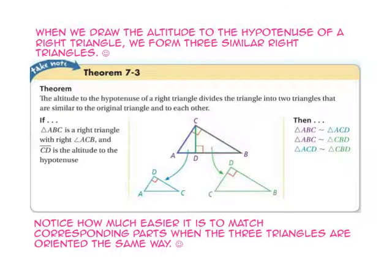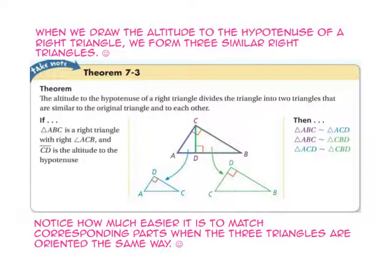Let's take a look at theorem 7-3. The altitude to the hypotenuse of a right triangle divides the triangle into two triangles that are similar to the original triangle and to each other. Notice how it is much easier to match the corresponding parts when the three triangles are oriented the same way.